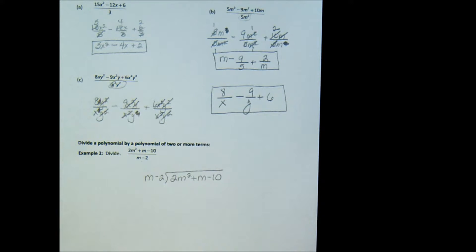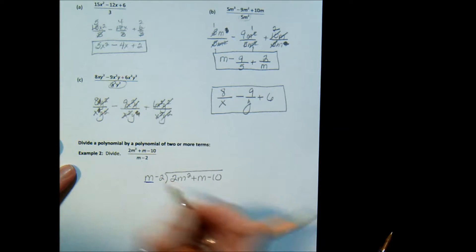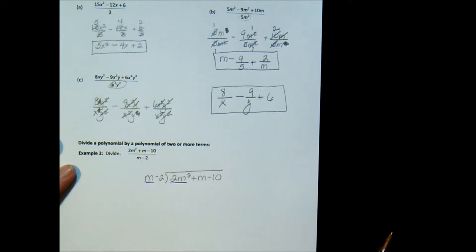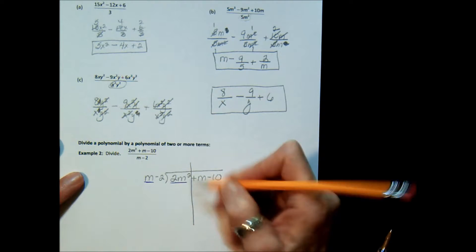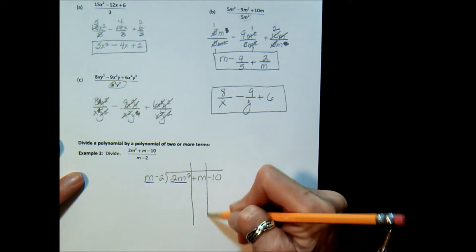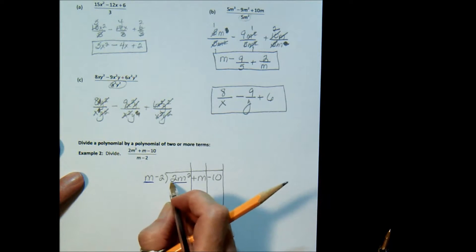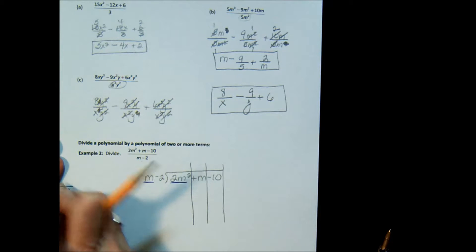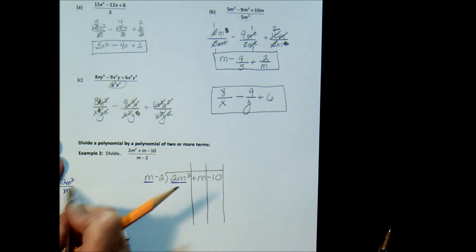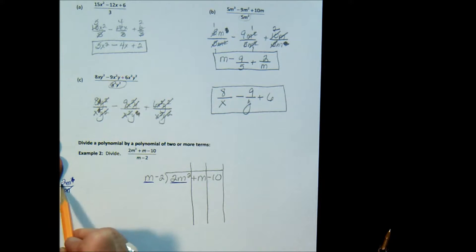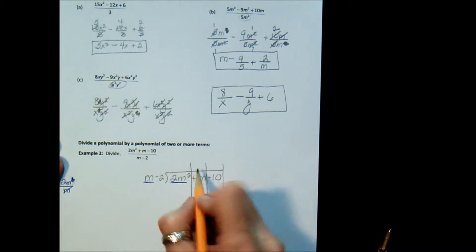I'm going to use a couple different colors because I think it will help you. We start and we say: how many times does m go into 2m²? We're just dividing the first term into the first term. I'm going to draw columns — this is for all the squared terms, this is for the m's that are not squared, and then just the plain numbers. So how many times does m go into 2m²? This m cross-cancels one of those, and what I have left is 2m. That 2m has to go in the m column — it matters where it goes.